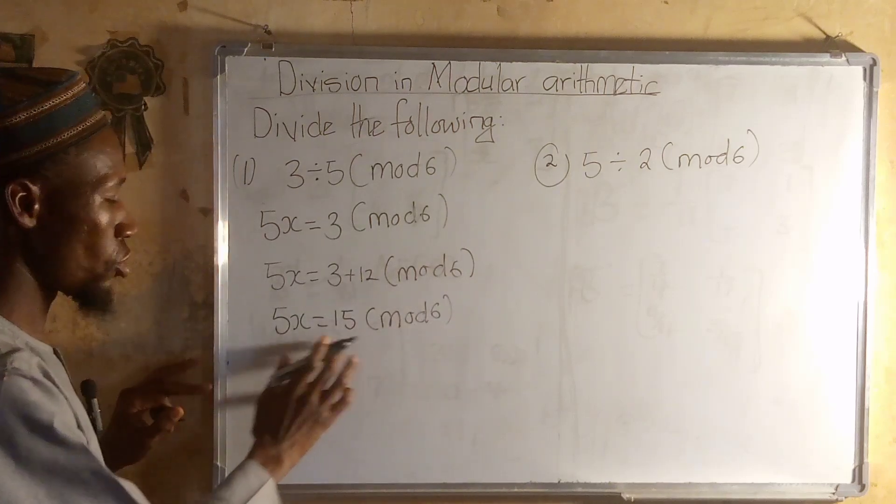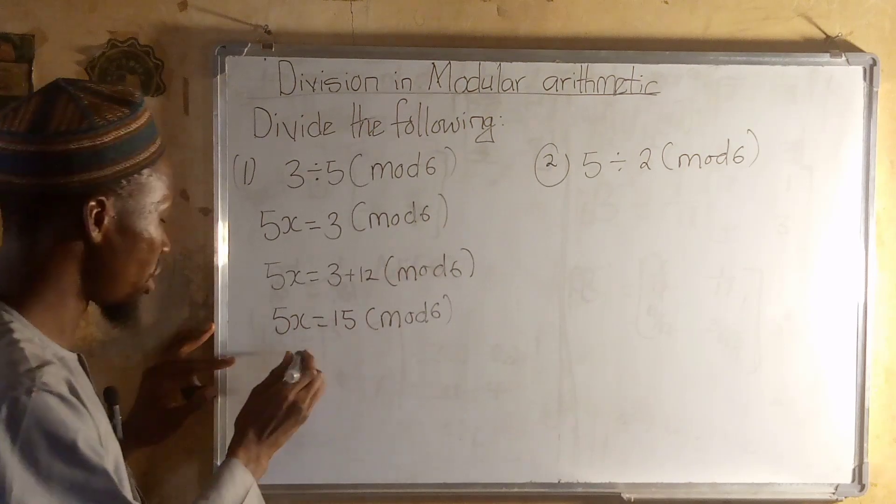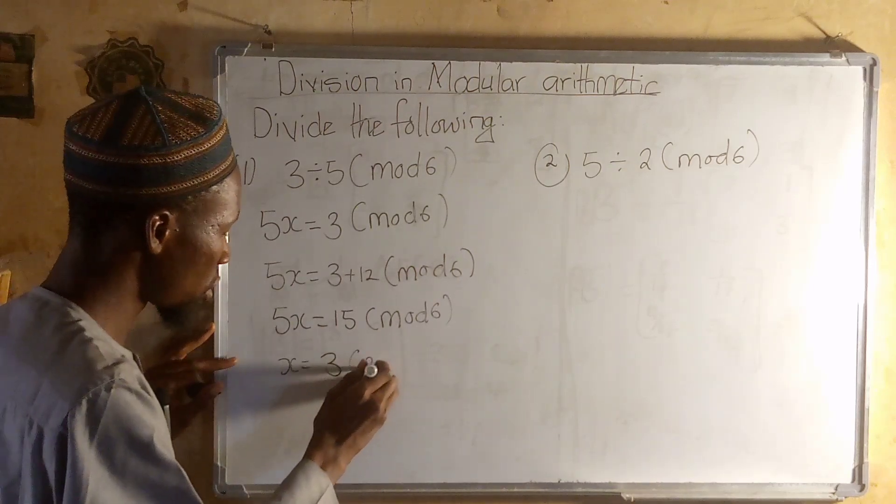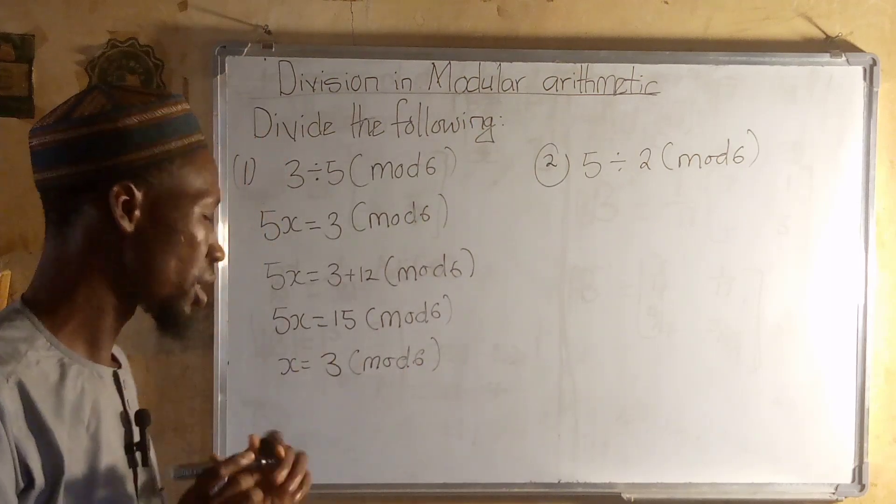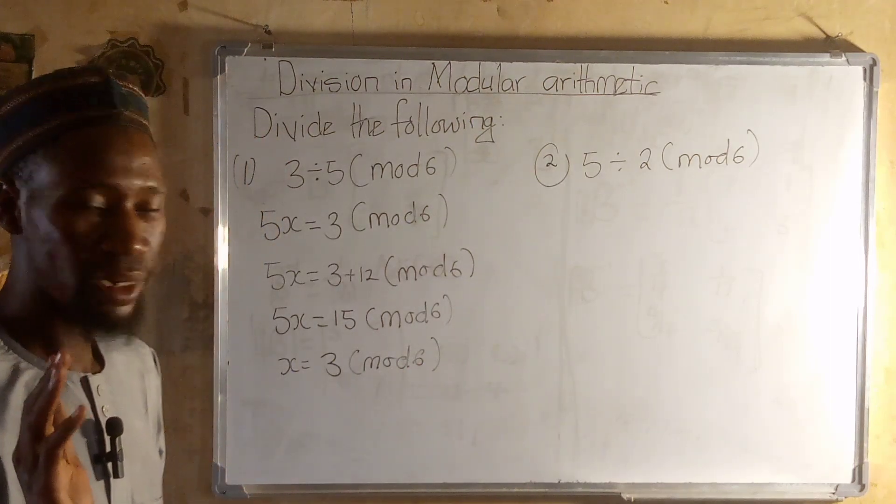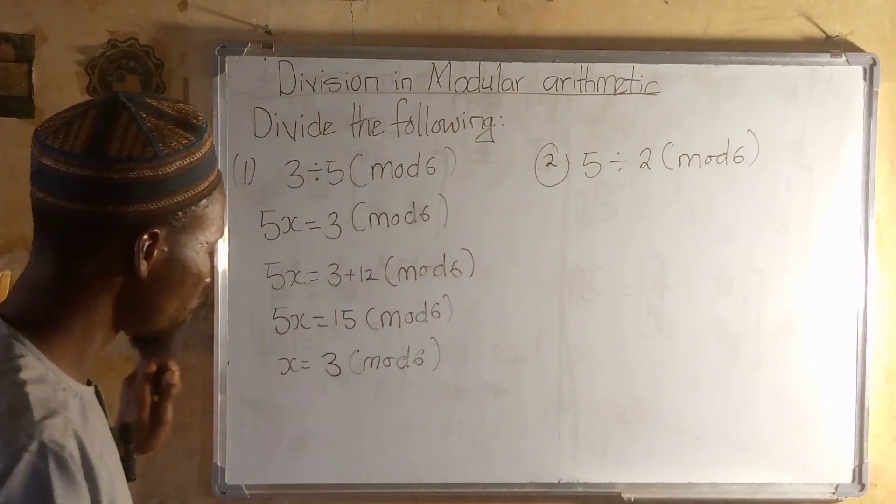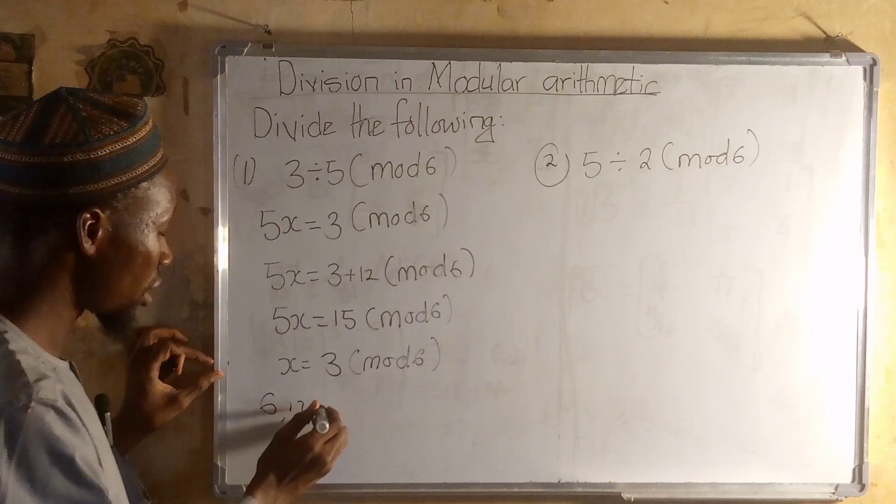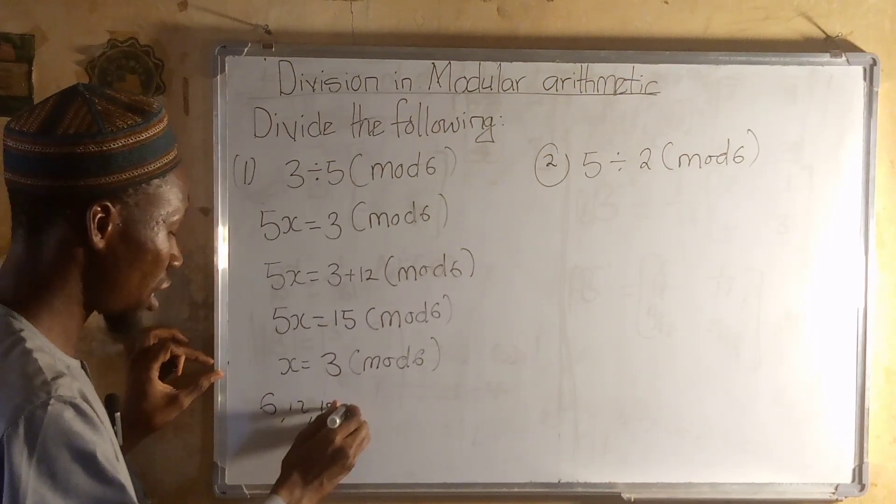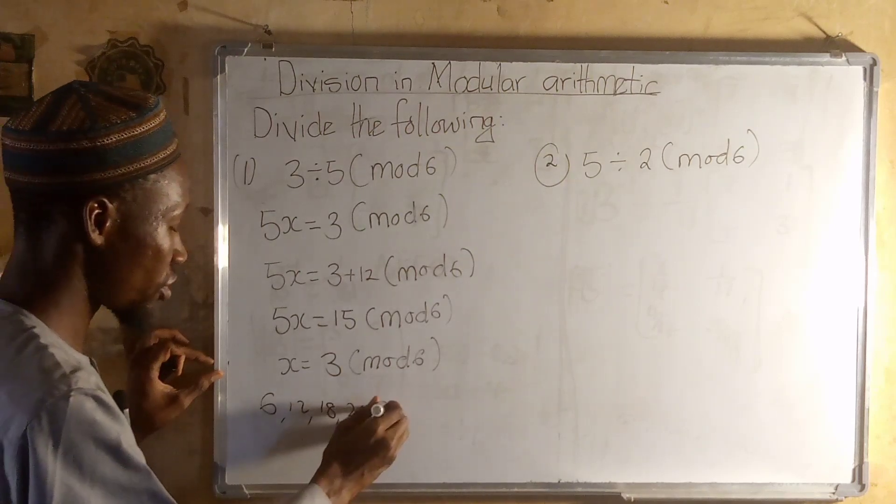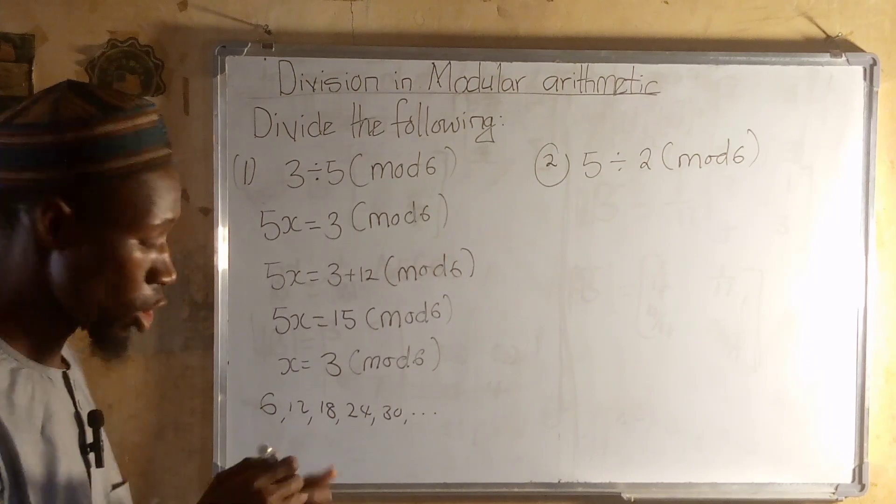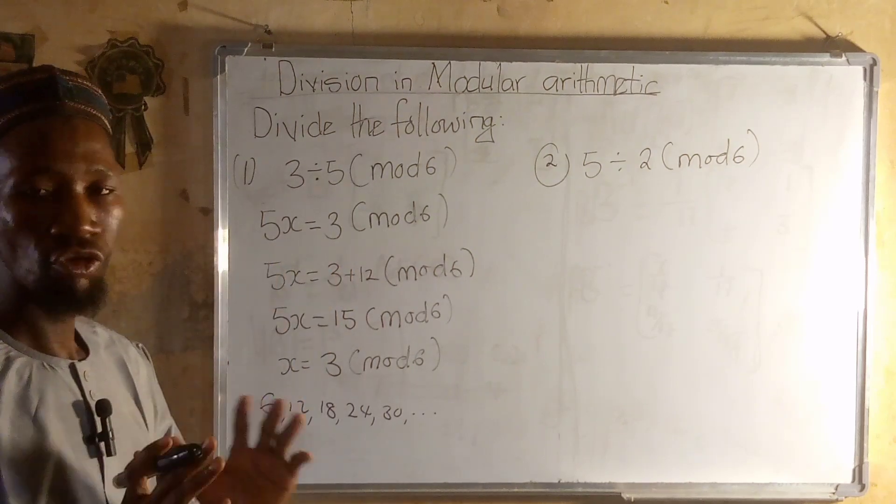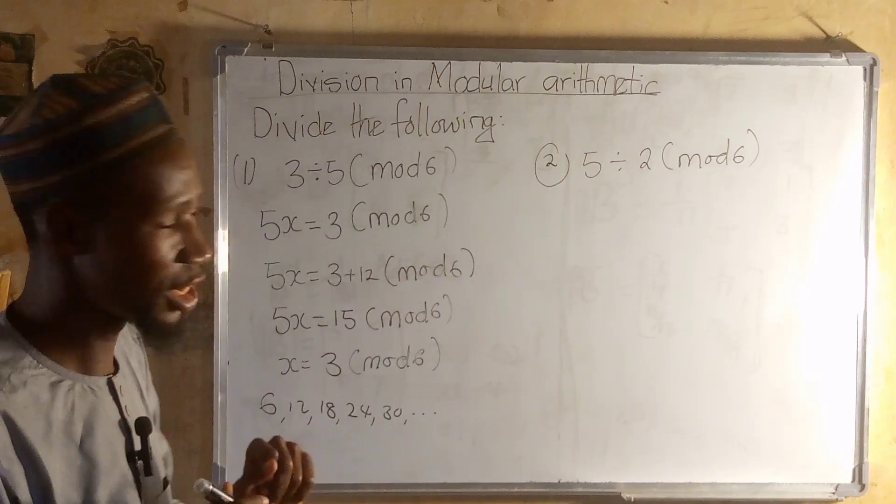15 divided by 5 equals 3, so we get x equals 3 mod 6. The pattern continues: if we keep adding 6, we get 6, then 12, then 18. Each divided by the same number gives us the pattern, confirming x equals 3.